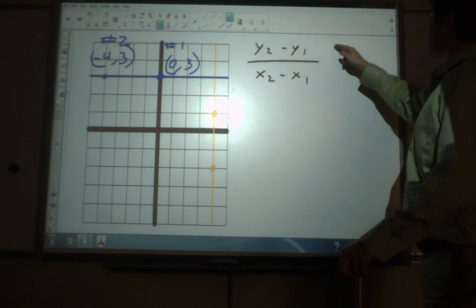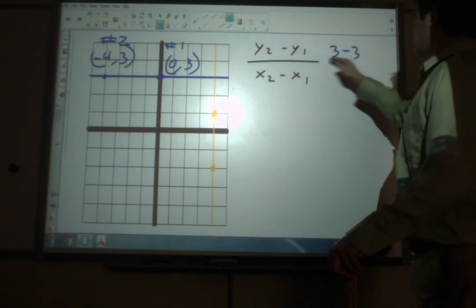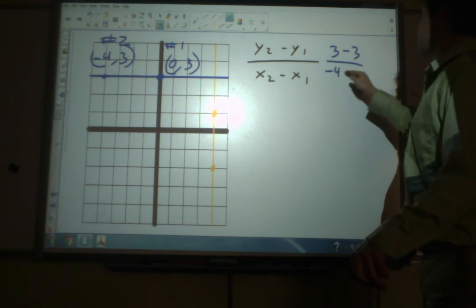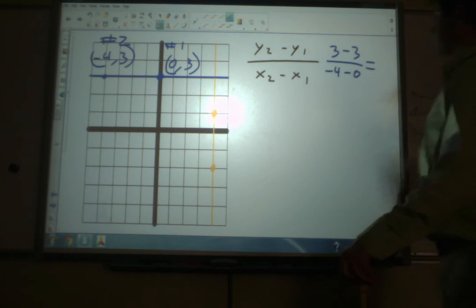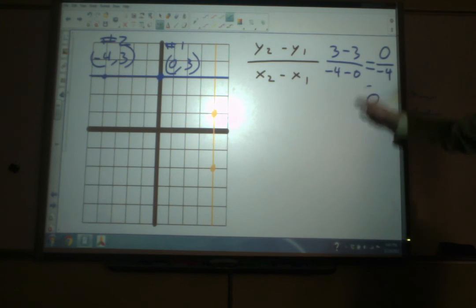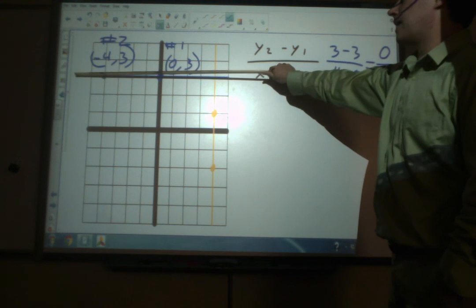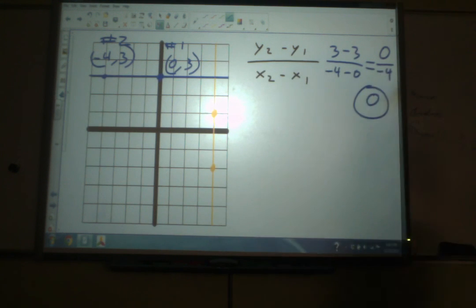I'm going to go a little quicker on the formula this time, filling the numbers in. y2 minus y1 over x2 minus x1. We subtract 3 minus 3 is 0. Negative 4 minus 0 is negative 4. 0 divided by anything is 0. So the slope is 0. That's fine. We can have a slope of 0. In fact, a slope of 0 is always going to mean a perfect horizontal line like this. The slope of 0. It's like a flat surface.